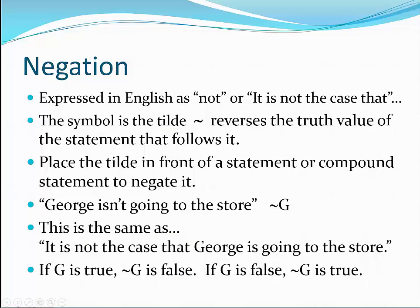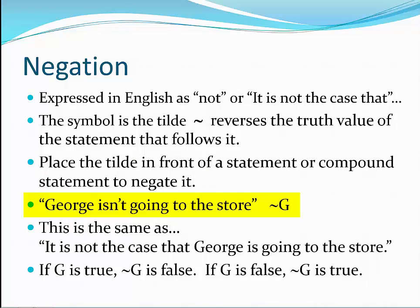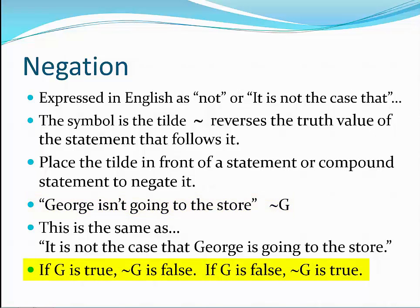Finally, we come to the connective called negation. It is expressed with the English not, or it is not the case that. It is expressed with the tilde, a character on the keyboard usually just to the left of the number one key. Negation is the only connective that doesn't connect two statements. Instead, it changes the truth value of a statement by placing the tilde directly in front of a statement. For instance, George is not going to the store can be expressed as tilde G. Using the phrase it is not the case that helps clarify that you are negating a statement, so it is not the case that George is going to the store means the same as George is not going to the store, and both can be expressed as tilde G. When a statement is true, the tilde changes it to false, and when it is false, it changes it to true.